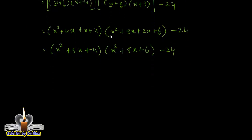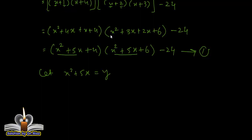یہ previous question کی طرح ہے۔ x²+5x دونوں جگہ نظر آ رہا ہے — وہی shape بن گئی ہے۔ اس کو equation number 1 کا نام دیتے ہیں۔ Let x²+5x = y، then equation 1 implies (y+4)(y+6) minus 24۔